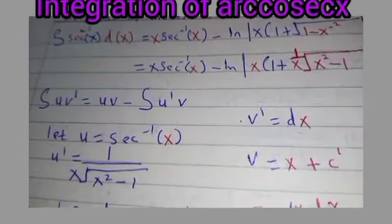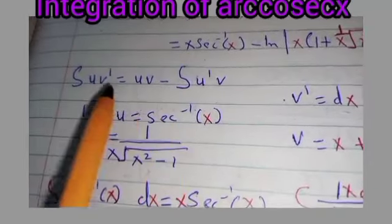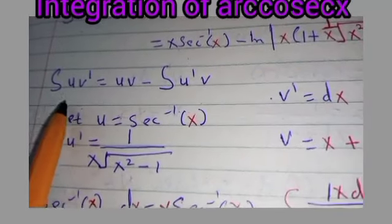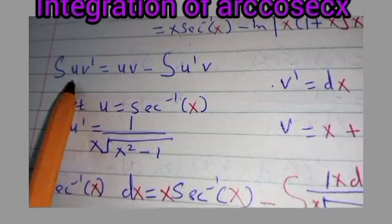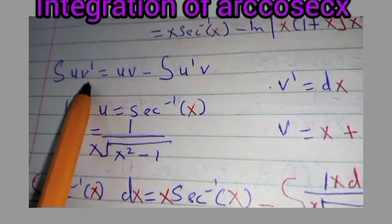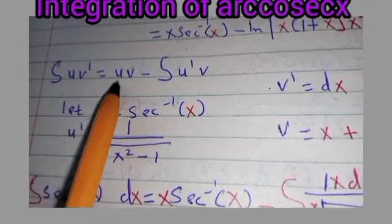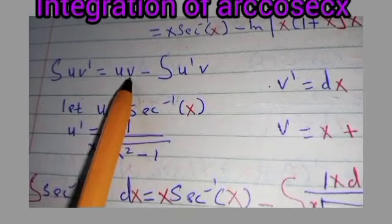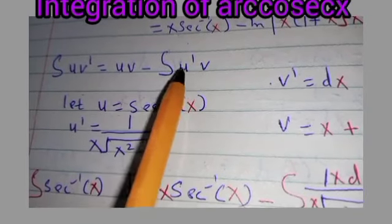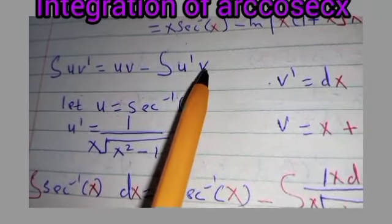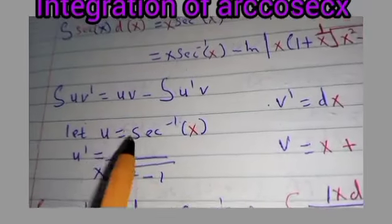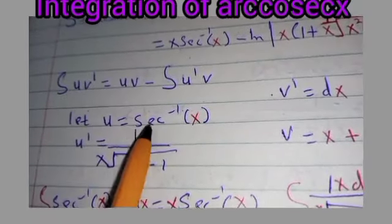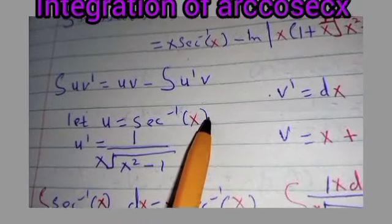To do this, we are going to integrate by parts. The integration by parts formula states that the integral of u·v' dx is equal to u multiplied by v minus the integral of u' times v. We are going to let our u be arcsec(x) as shown.